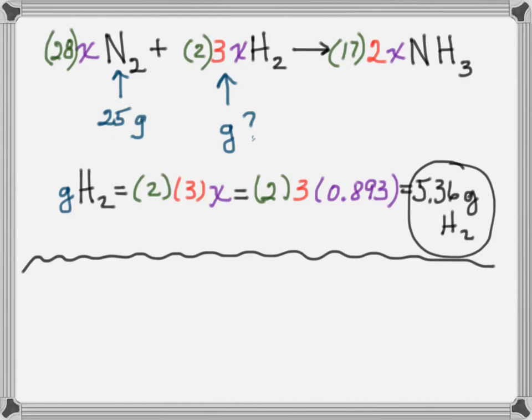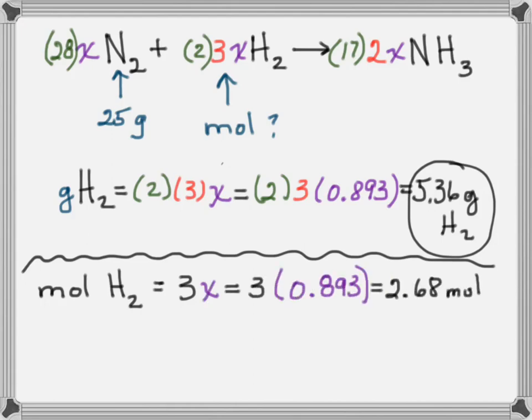So let's say instead you wanted to know the moles of hydrogen that you need. Well, it would just be 3 times X, 3 times our magic number, 2.68 moles of hydrogen needed.